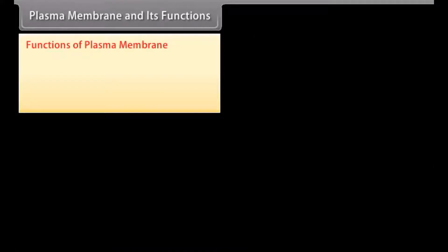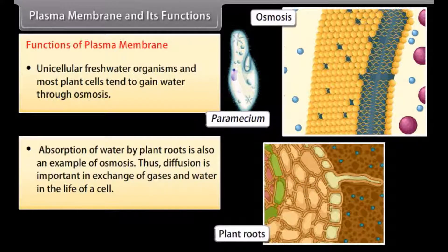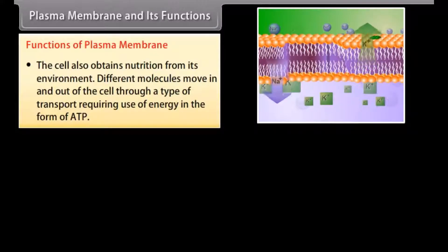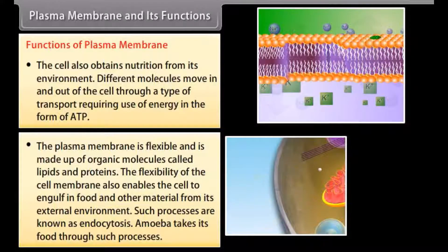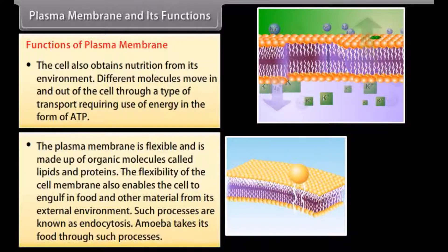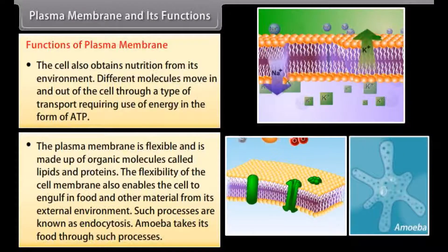Functions of plasma membrane. Unicellular freshwater organisms and most plant cells tend to gain water through osmosis. Absorption of water by plant roots is also an example of osmosis. Diffusion is important in exchange of gases and water in the life of a cell. The cell also obtains nutrition from its environment — different molecules move in and out through a type of transport requiring energy in the form of ATP. The plasma membrane is flexible and made up of organic molecules called lipids and proteins. Its flexibility enables the cell to engulf food and other materials from its external environment — such processes are known as endocytosis. Amoeba takes its food through such processes.